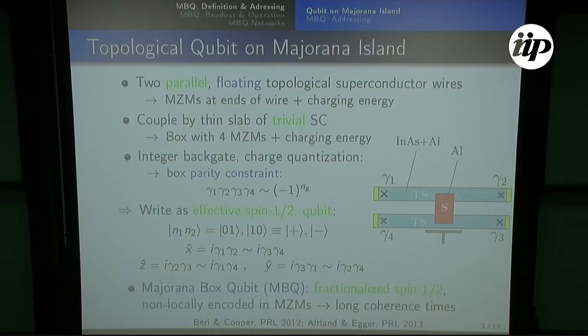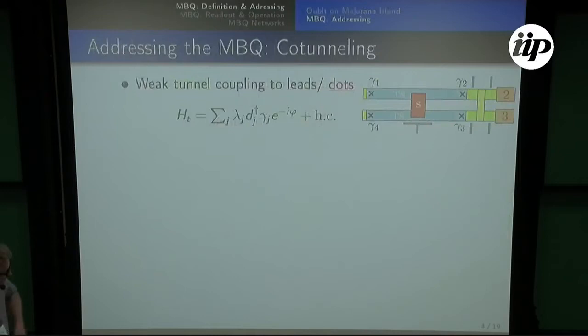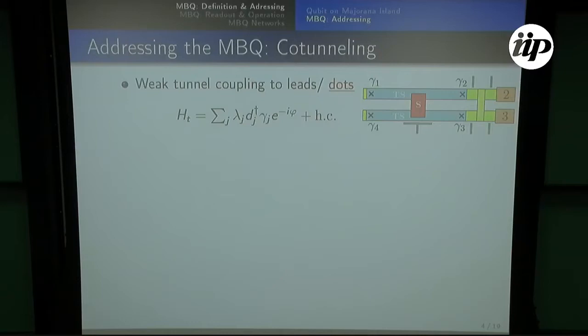At the same time, because the Majoranas are exponentially localized with very small overlap, we hope that this will yield long coherence times. How do you address it? You have a nice qubit, at least if Majoranas work like that, but the problem is how to address it because everything is encoded in a very non-local way. Our idea is to put leads here — numbers two and three are just some leads, or quantum dots — and for the moment we think quantum dots may behave more favorably for a variety of reasons that will become clear later in the talk.